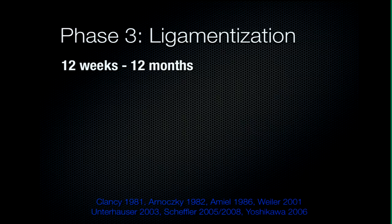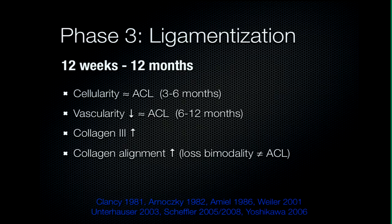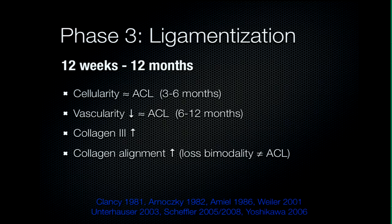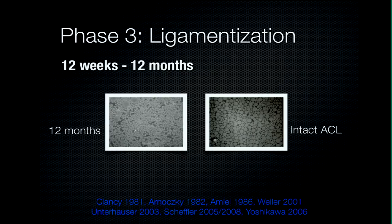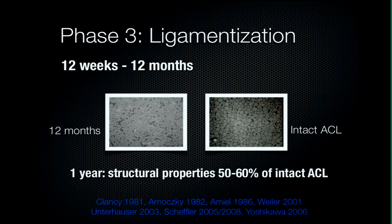The third phase, ligamentization or maturation, occurs between 12 weeks and 12 months in animals. After the primary increase of cellularity in the proliferation phase, it now slows down and looks like an ACL at three to six months after surgery. Vascularity also diminishes and becomes somewhat similar to an ACL at six to twelve months. However, collagen type 3 content remains elevated, meaning a weaker graft, and collagen alignment — although it increases — loses its bimodality. On the right is an intact ACL showing collagen fibrils of larger and smaller diameter; on the left is a graft at 12 months, where all fibrils are of the smaller, weaker type. Structural properties in animal studies show only 50–60% strength compared to the original ACL.